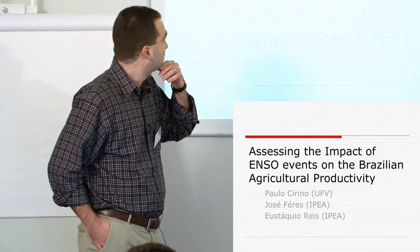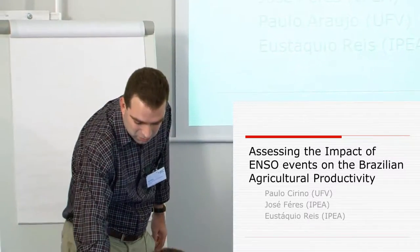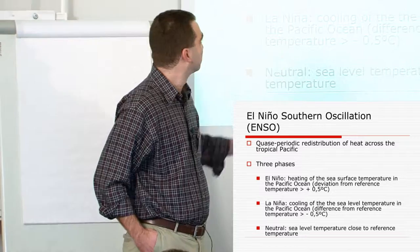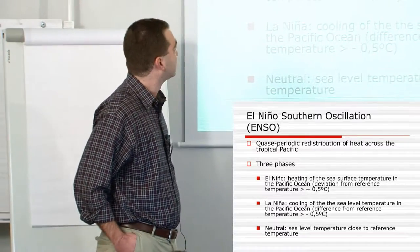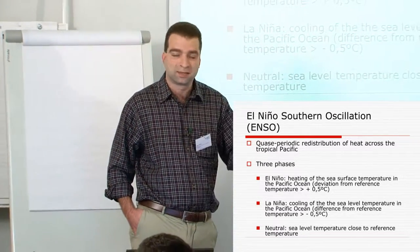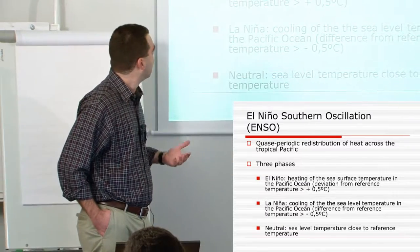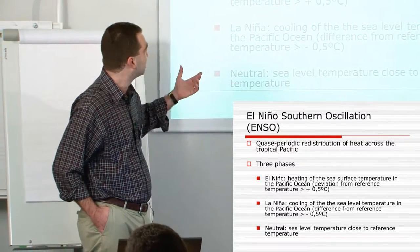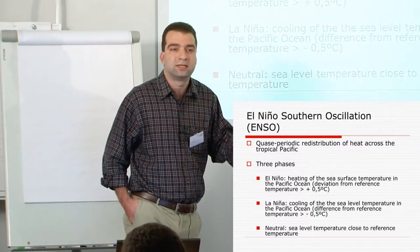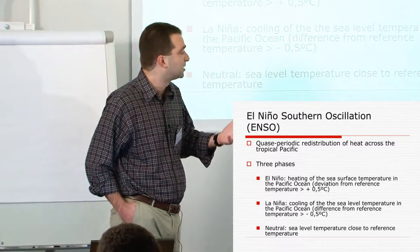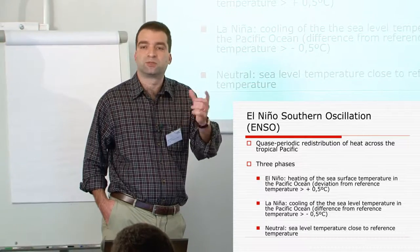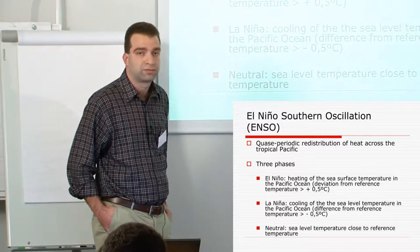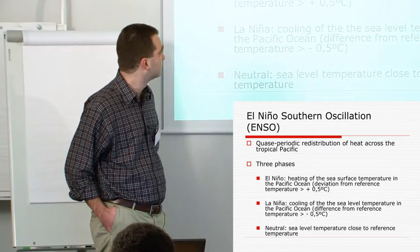First of all, what is what we call ENSO events? In fact, ENSO is just an acronym for El Niño Southern Oscillation. It's a climatic event that is about a quasi-periodic redistribution of heat across the tropical Pacific. Maybe it's one of the most important coupled ocean atmospheric events that has an impact on inter-annual variability of climate at the global level.